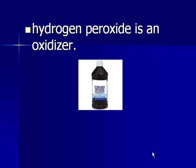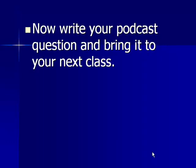Hydrogen peroxide is an oxidizer, and that is a chemical property. You may not know what the word oxidizer means, but it does sound very chemical. So sometimes you may not know exactly what the words mean when you hear them, but they have a chemical sound to them. Now write your podcast question down and make sure you bring it to your next class.